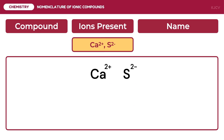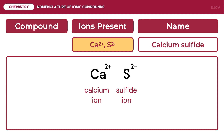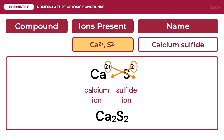For the last example, we are going to identify the name and formula for a compound formed by calcium with a positive 2 charge and sulfur with a negative 2 charge. Calcium with the positive 2 charge is the calcium ion, and sulfur with the negative 2 charge is the sulfide ion. Therefore, we have calcium sulfide. Once we do a criss-cross of charges, we get Ca₂S₂. Ionic compounds are always treated as empirical formulas in simplest terms, so the formula simplifies to CaS.